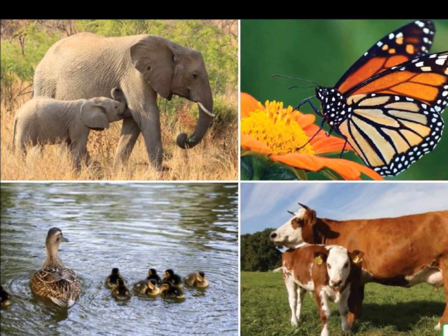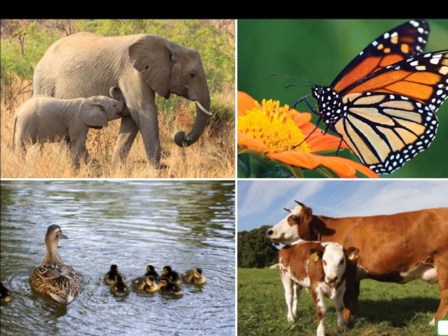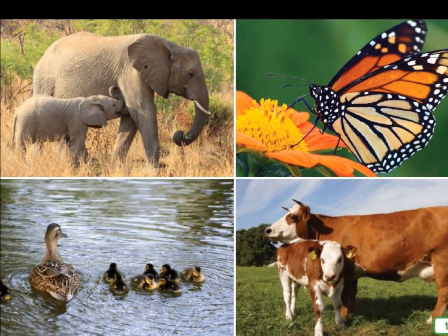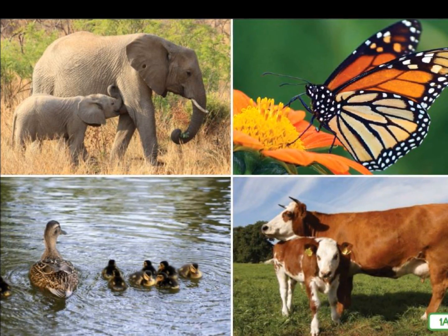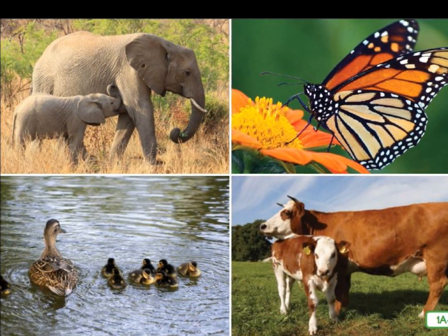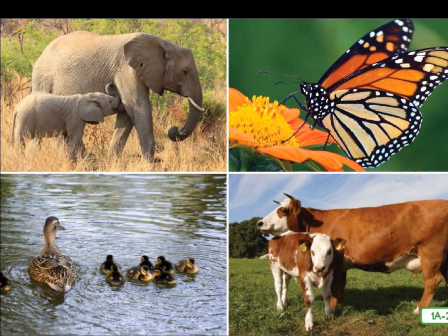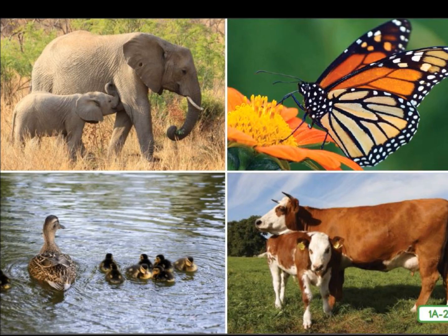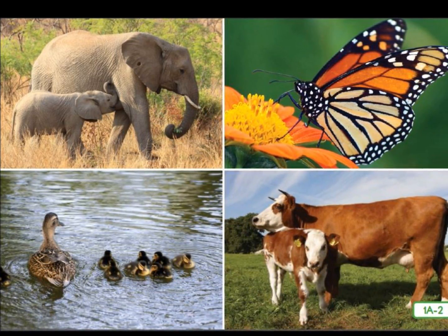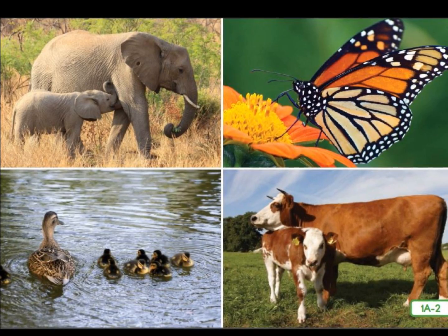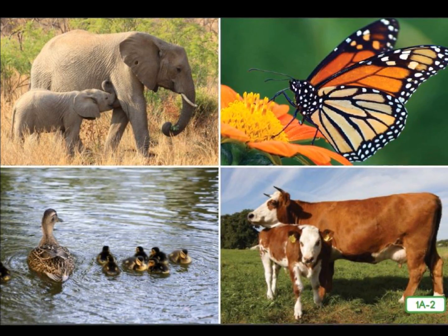The reproduction of living things is one way that life continues on Earth. A life cycle includes each stage that a living thing goes through from birth to adult. Here, the word stage means a particular time in the growth of something. The word stage can also have other meanings, such as a raised platform on which people dance, sing, and act. You will hear a lot more about life cycles later in this domain.